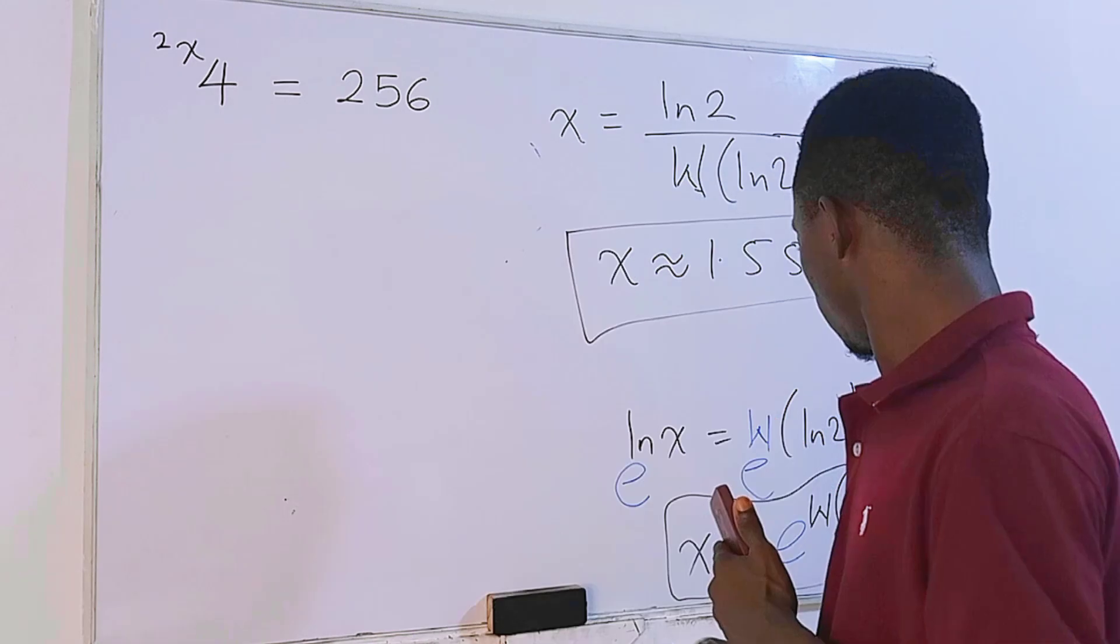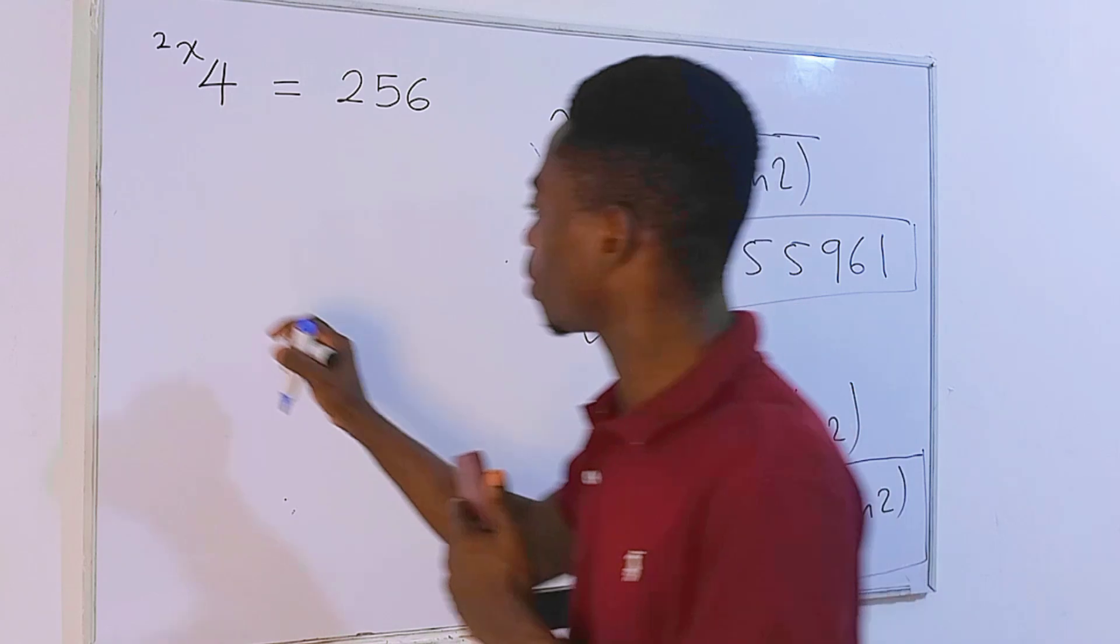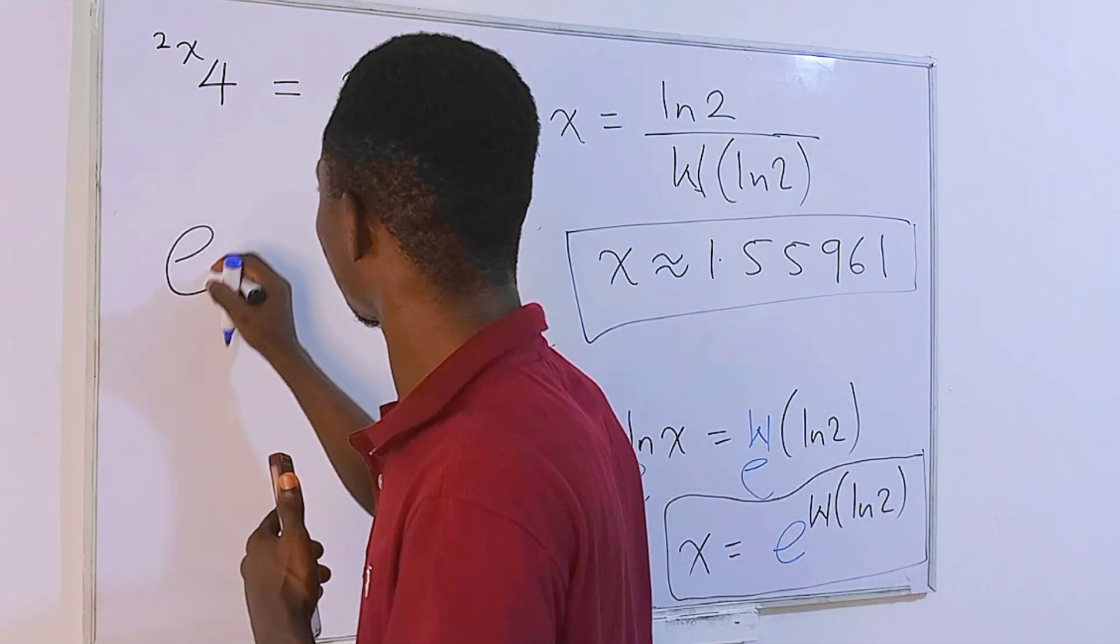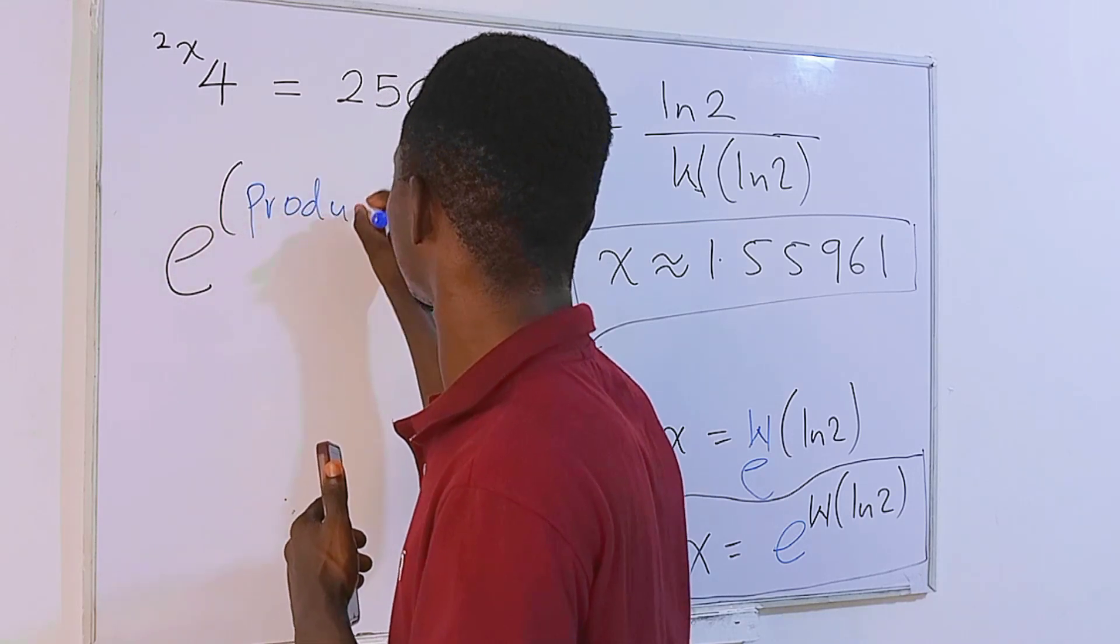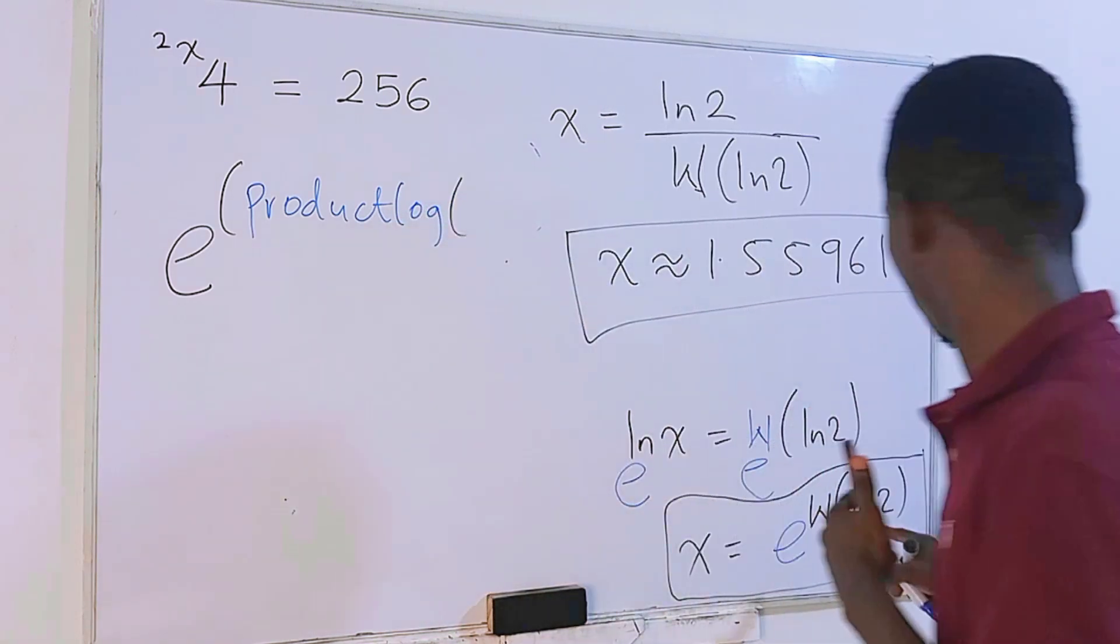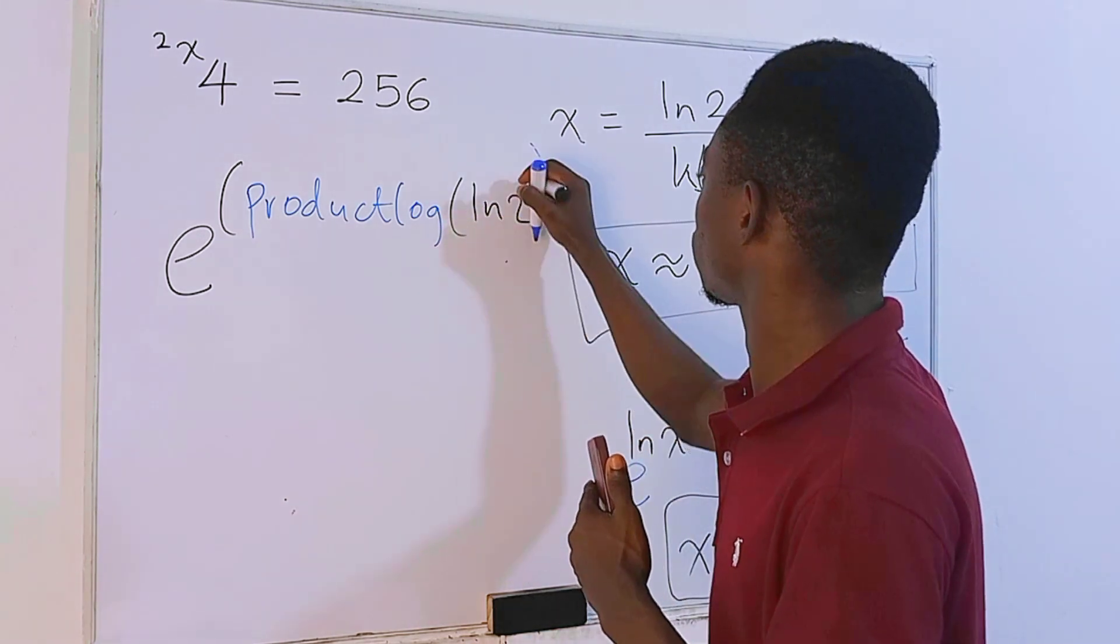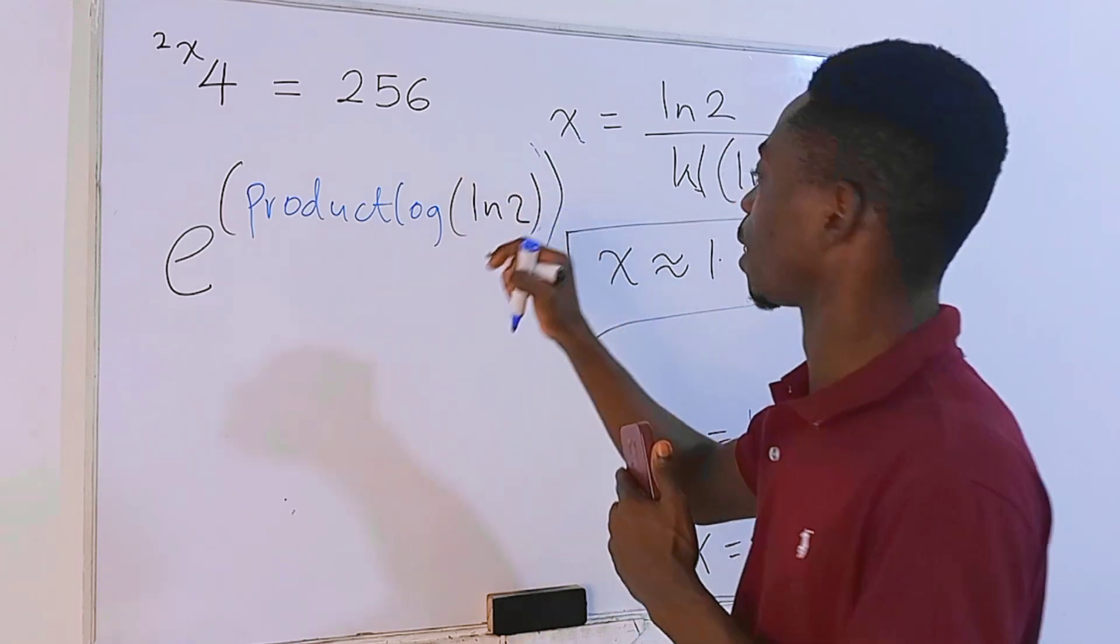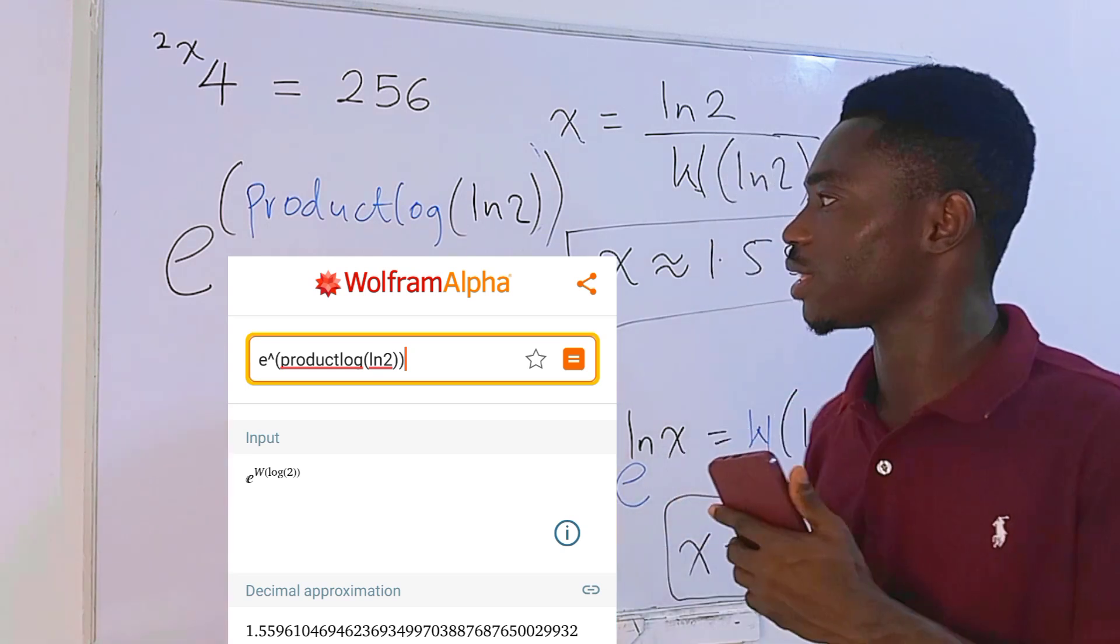If you want to compute this in Wolfram Alpha, this is actually going to be e raised to the power parenthesis product log in parenthesis ln of 2. You close it, then you close it again because we have two parentheses. So this is how to compute this in Wolfram Alpha.